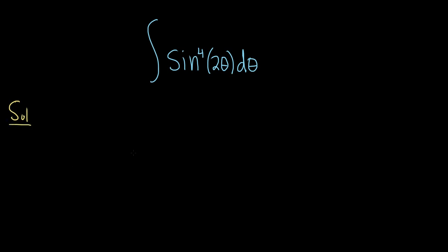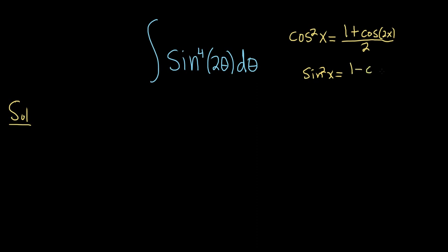Whenever you have even powers of sine and cosine, there are some identities you can use. There are two identities. The first one is cosine squared of x equals 1 plus cosine 2x over 2. The other identity is sine squared of x equals 1 minus cosine 2x over 2.